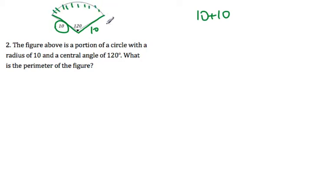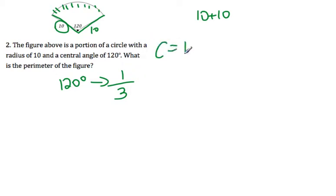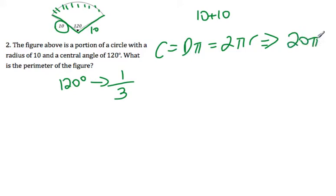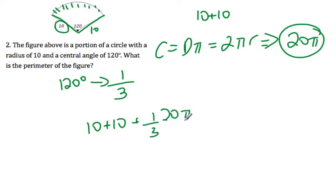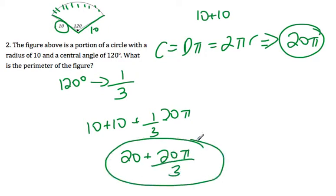We also have to add this arc, which is part of a circumference — not the whole circumference. It's 120 degrees, which is one-third of the circle, meaning it's one-third of the circumference. Circumference equals diameter times pi, or 2 pi r. With radius 10, circumference is 20 pi. But we only have one-third of it. So our answer is 10 plus 10 plus one-third of 20 pi, which simplifies to 20 plus 20 pi over 3.